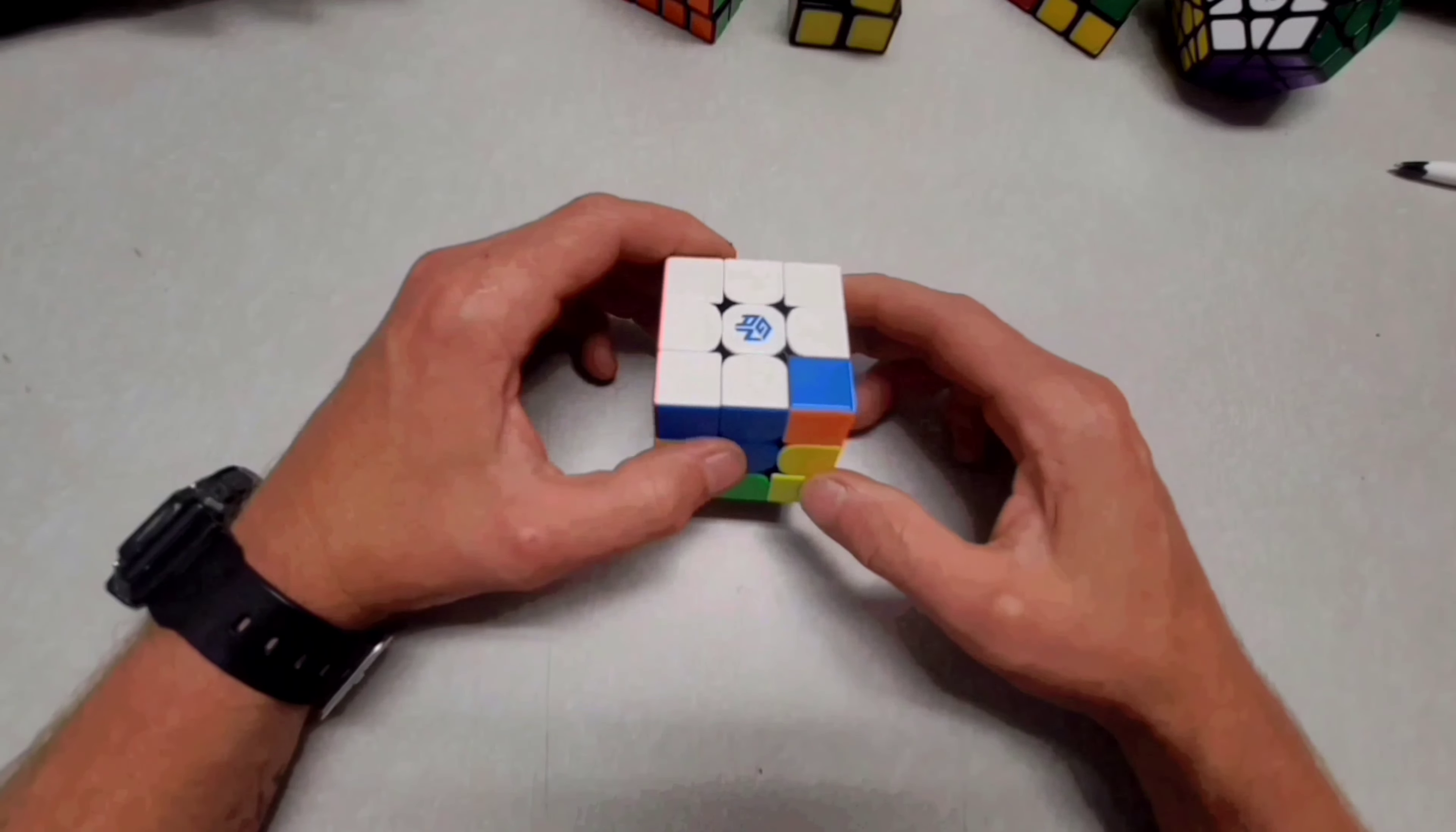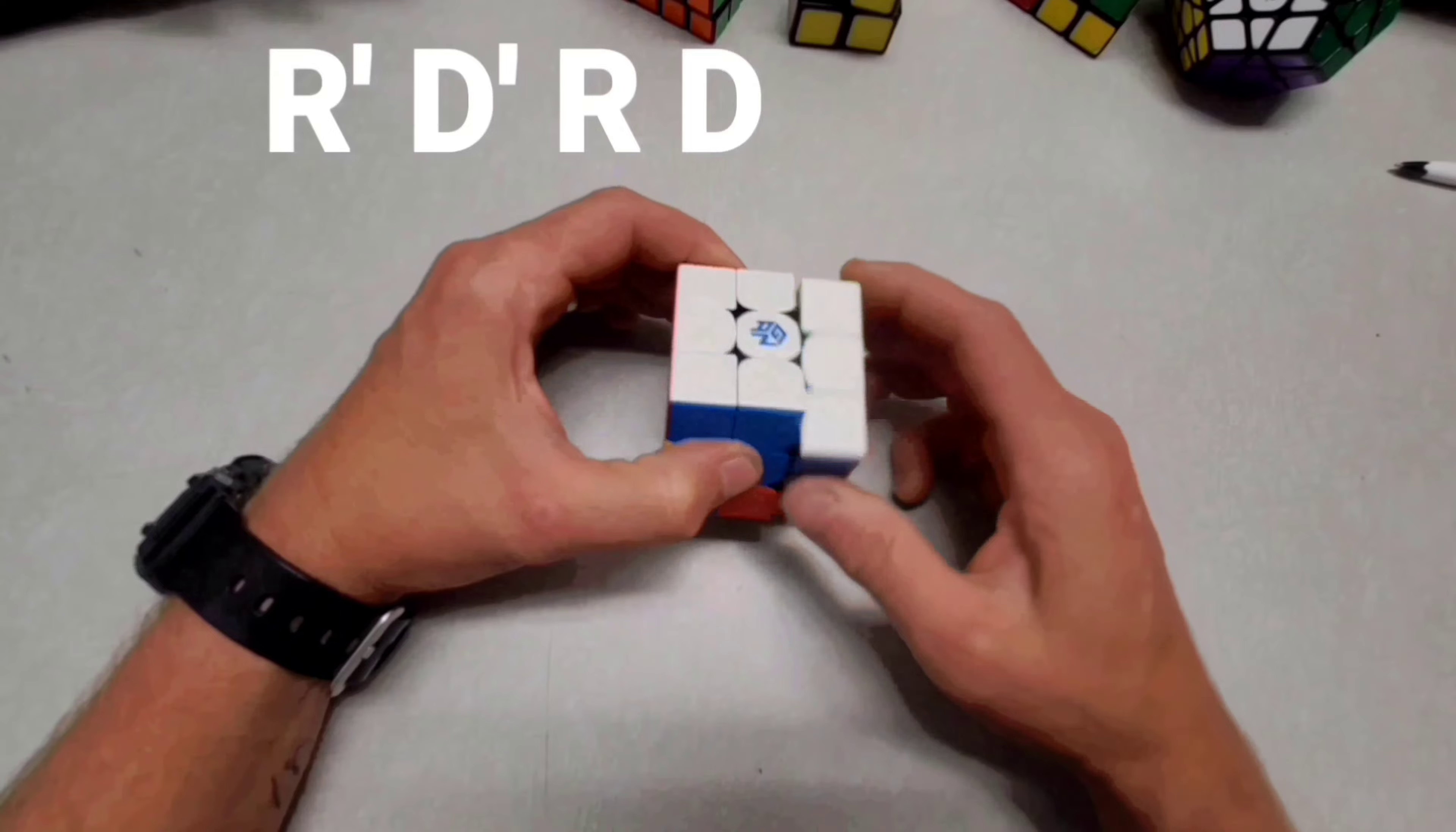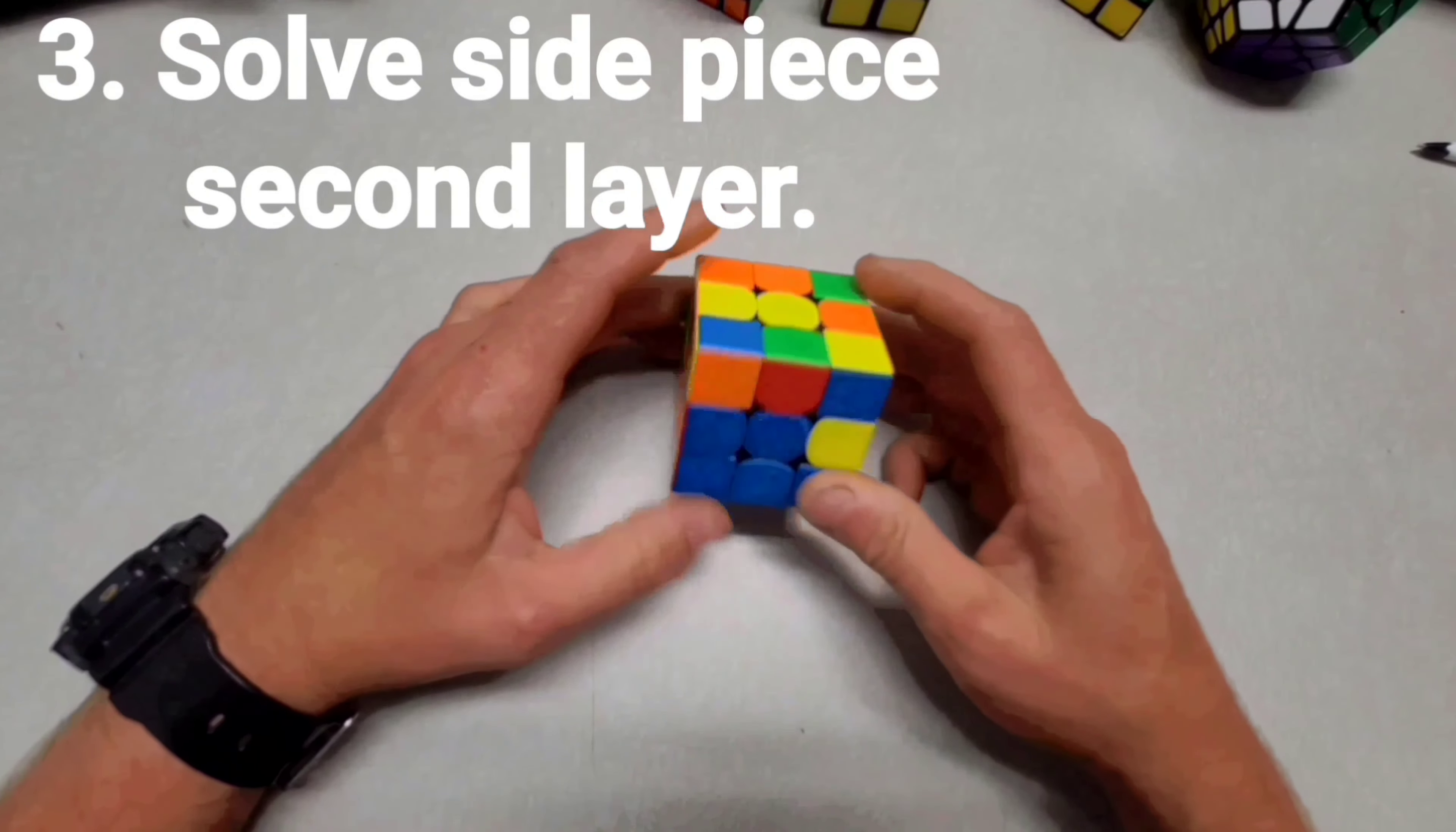Here's this piece. So we can do that. Right prime, down prime, right, down, right prime, down prime, right. And it made it. So that is the first layer. The white whole layer, we flip it upside down.